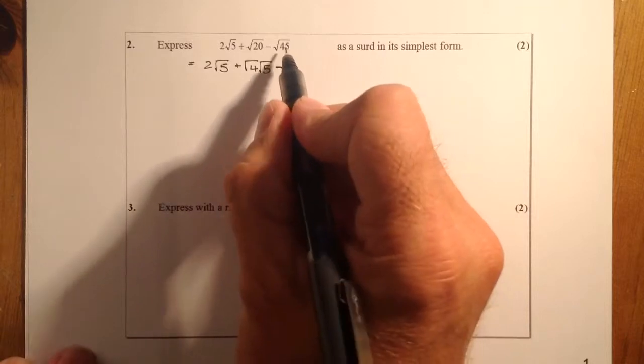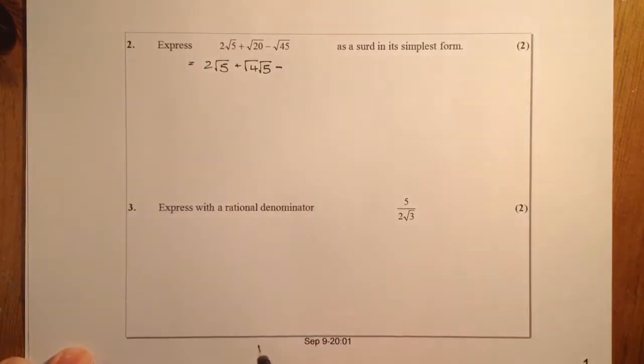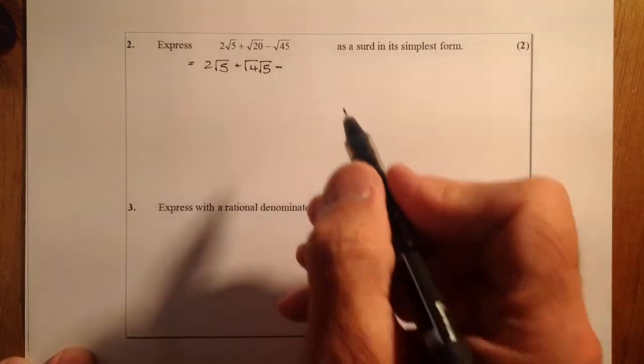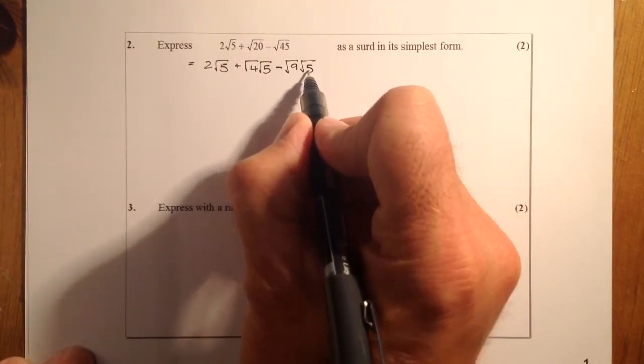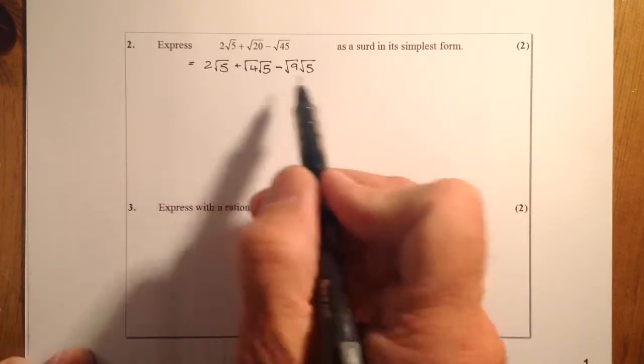I'm going to subtract from that two numbers that multiply together to get 45. One of them is a square number. So I've got square root of 9 and square root of 5. So the square root of 5 is appearing in all of these now.